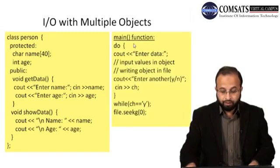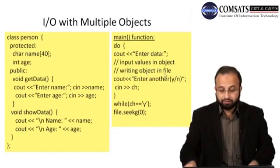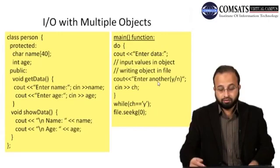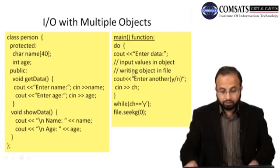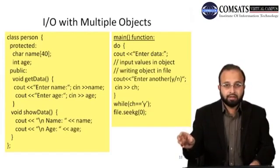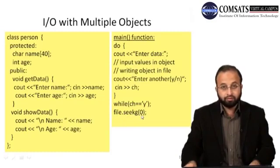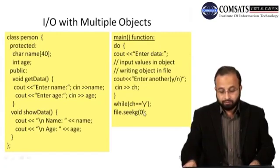For I/O operations on multiple objects, we use the same person class with getdata() and showdata() functions. In main, we create a prs object and use a do-while loop where the user inputs data, it is written to the file using write(), and the user is asked whether to enter another record. When the user presses N, the loop breaks.